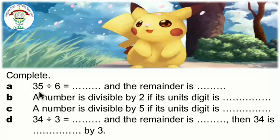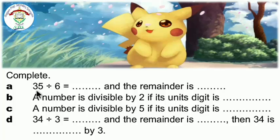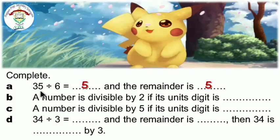Complete: 35 divided by 6. We know 35 is not in the times table of 6, so find the closest number to 35 in the times table of 6. You will find 30. 5 times 6 equals 30, so the quotient is 5. 35 minus 30 equals 5, so the remainder is 5.